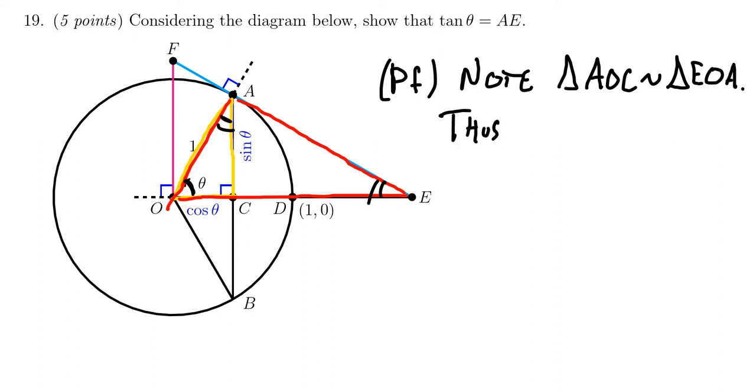Thus, we get by proportions that AE over—so notice AE is the side we're trying to consider right here. What does AE coincide with? AE on this one. So with respect to, I'm actually going to draw these triangles to the side for a moment. Here's angle theta. So this is OCA. With respect to angle theta, this is the opposite side. This is the adjacent side. And this is the hypotenuse.